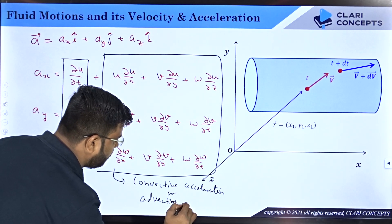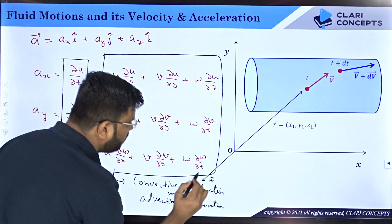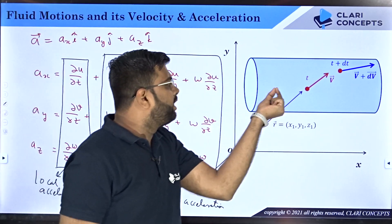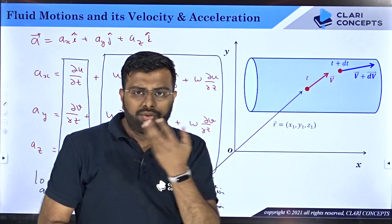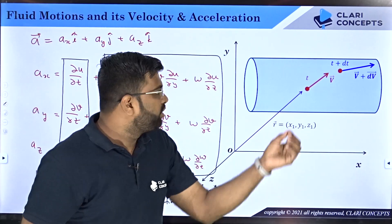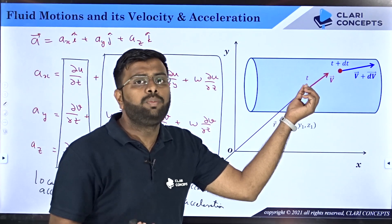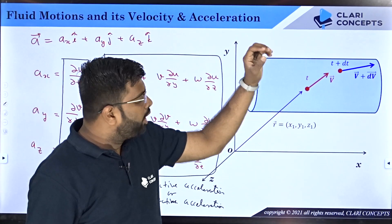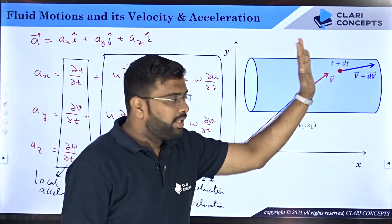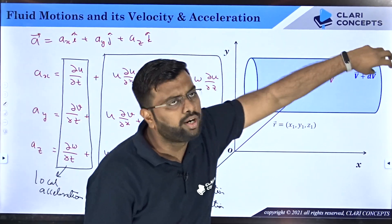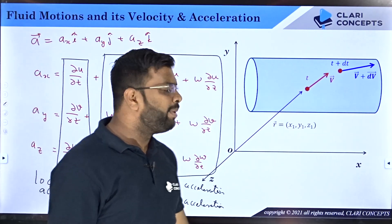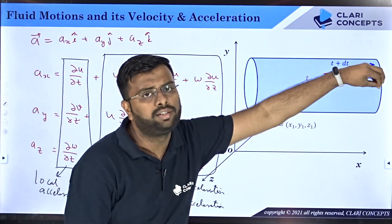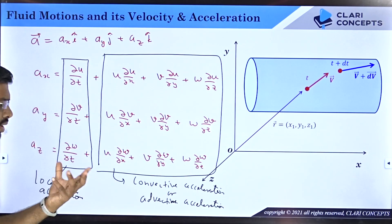To remember these equations easily: write the operator [∂/∂t + u(∂/∂x) + v(∂/∂y) + w(∂/∂z)] and then apply it to u for ax, to v for ay, and to w for az. This gives you all three components consistently without rederiving each time.